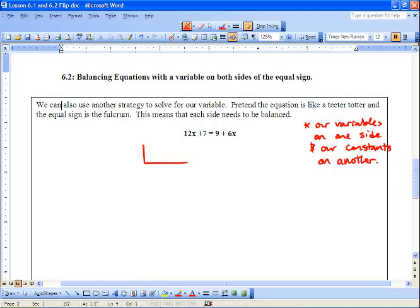So what does this look like? We've got a bin on this side and we've got a bin on this side. And it's kind of on a teeter-totter and there's our fulcrum, there's our equal sign. So we've got 12 x's, 1, 2, 3, 4, 5, 6, 7, 8, 9, 10, 11, 12.